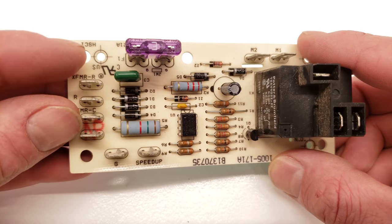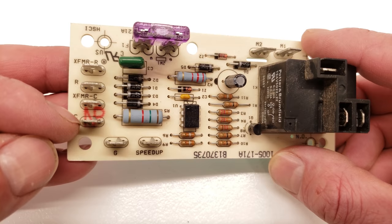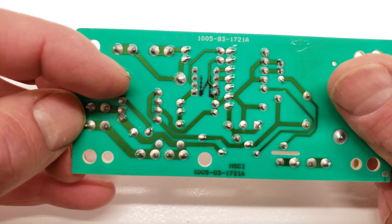Here is your common, XFMR-C. You may have it say X-C or T, but these are your power wires to the control board. Your common directly connects to this common here. You can see on the back of the board the connection connects right there.